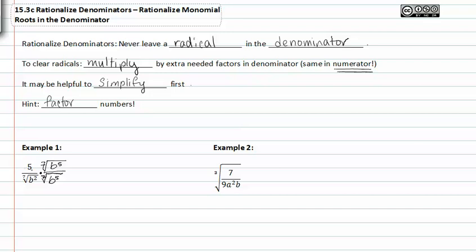When we multiply fractions, we multiply straight across. So we get five times the seventh root of b to the fifth in the numerator, all over the seventh root of b to the seventh in the denominator. Notice that we multiplied the seventh root of b to the second times the seventh root of b to the fifth — you get the seventh root of b to the seventh because when you multiply bases you add exponents. Now we can simplify the radical in the denominator by dividing the exponent by the index: seven divided by seven is one with zero remainder, so one b comes out in the denominator.